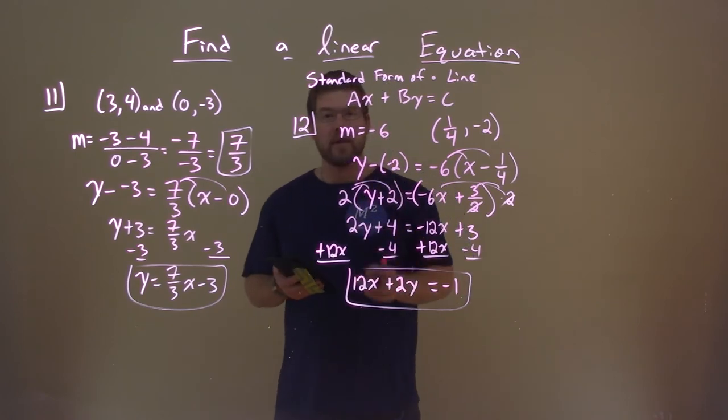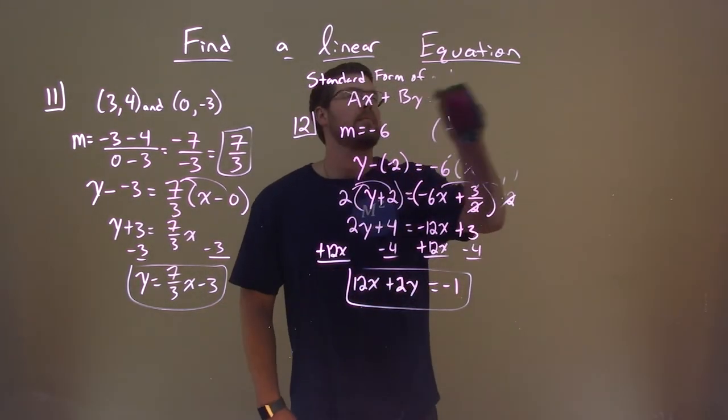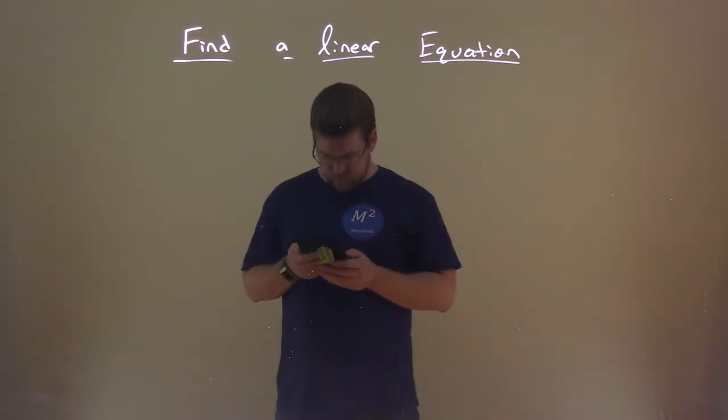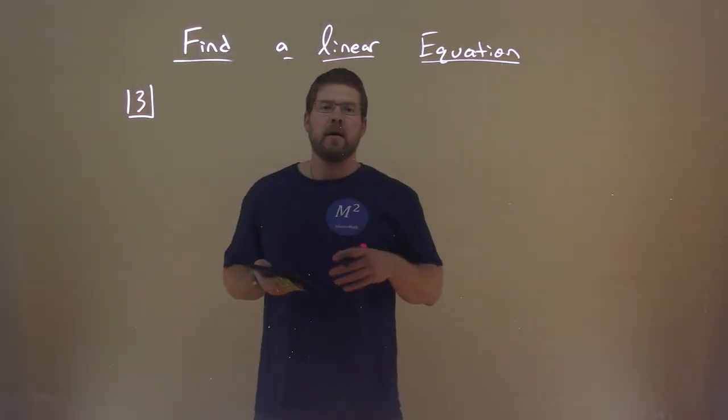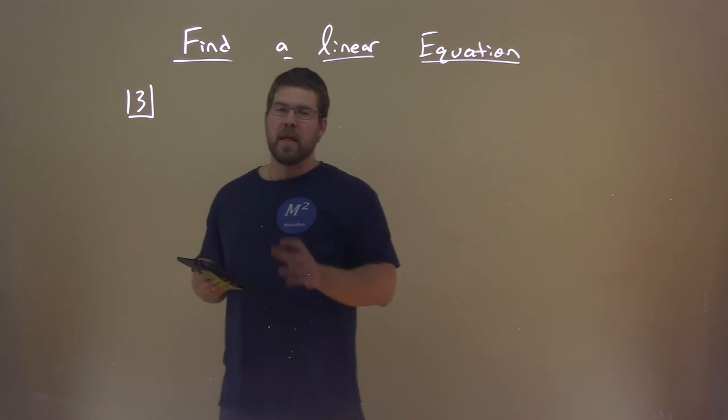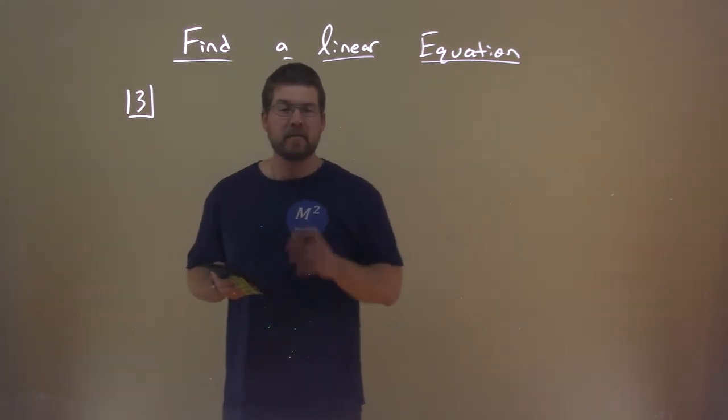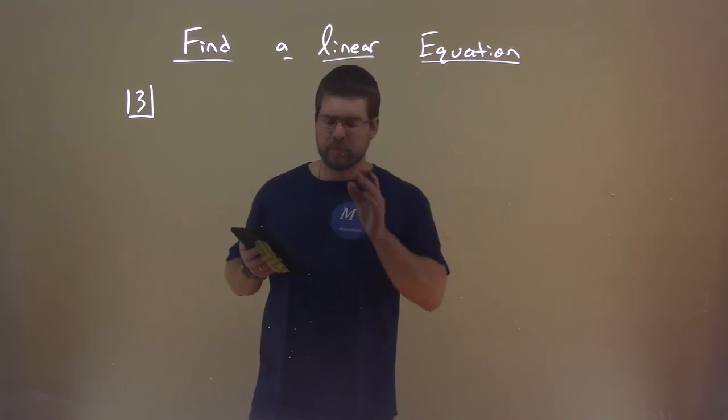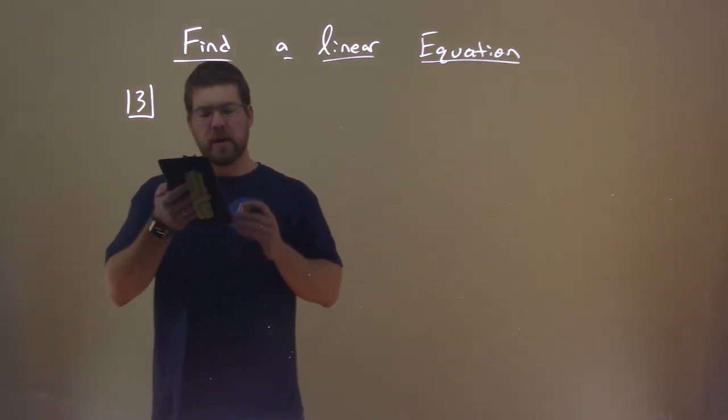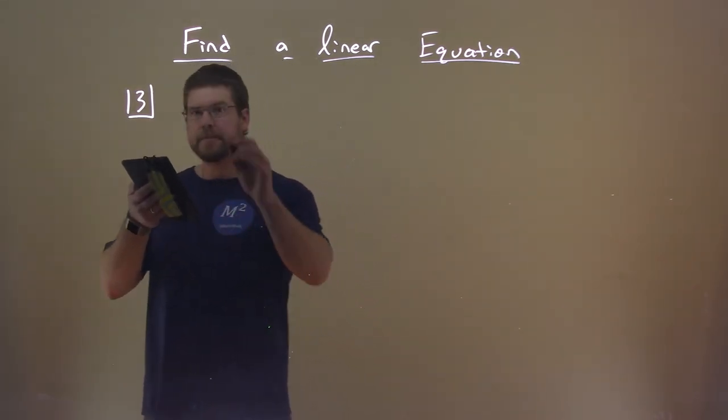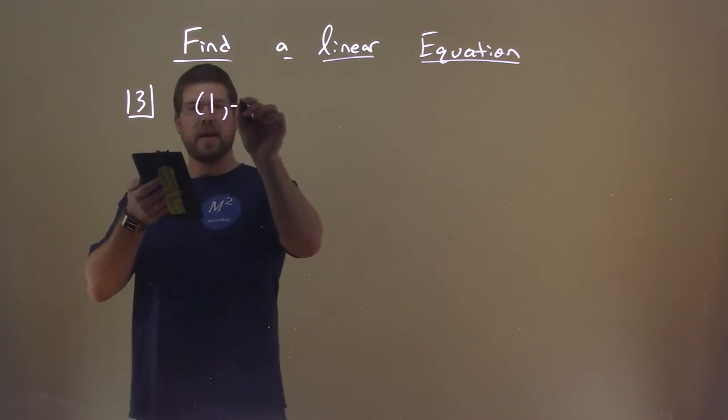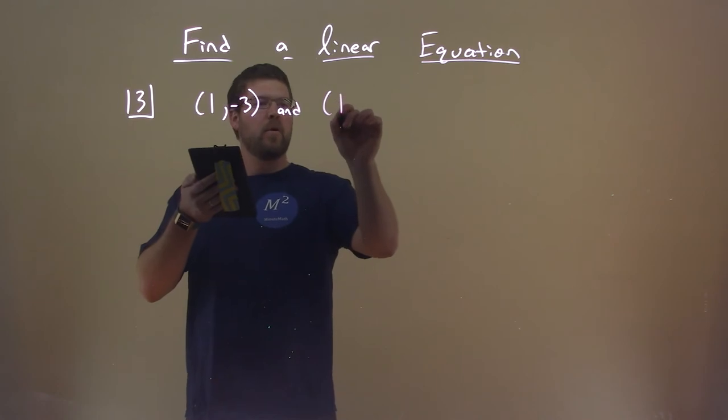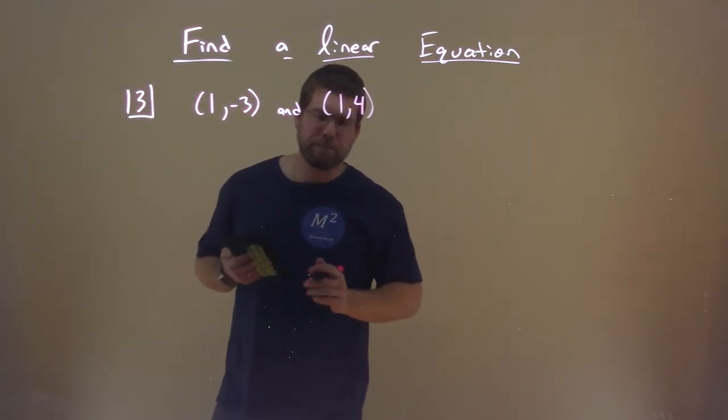So let me go erase and we'll get through another problem here. So now we have another problem here. And this one's going to be tricky. And it's going to involve horizontal or vertical lines. So we want to find the equation of line passing through these given points: (1, -3) and (1, 4).